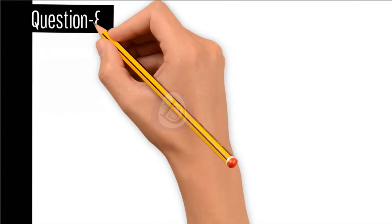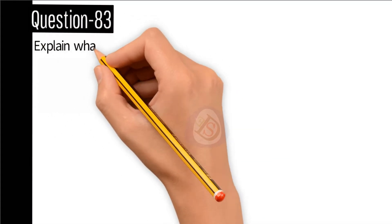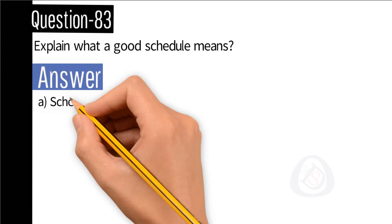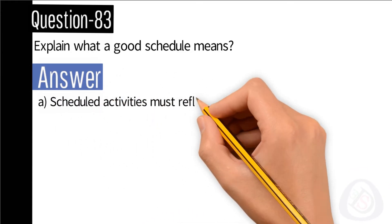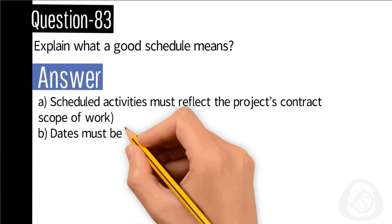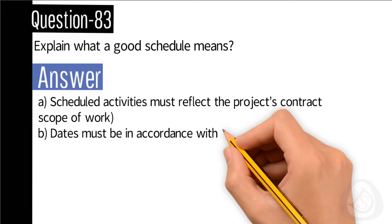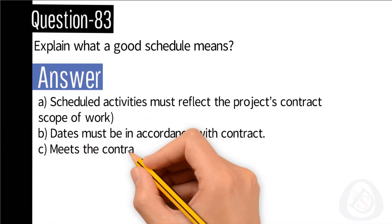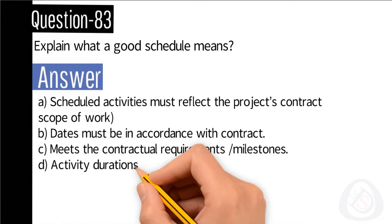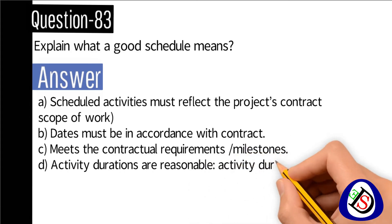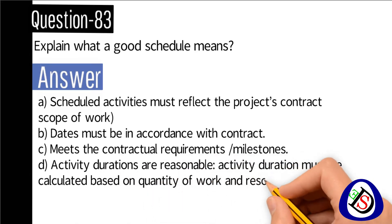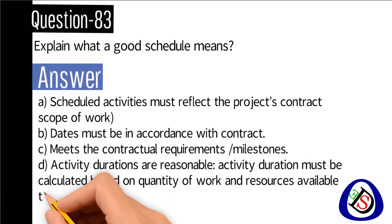Question number 83: Explain what a good schedule means. Answer: A) Scheduled activities must reflect the project's contract scope of work. B) Dates must be in accordance with the contract. C) It meets the contractual requirements or milestones. D) Activity durations are reasonable — activity duration must be calculated based on quantity of work and resources available to be applied to the work.